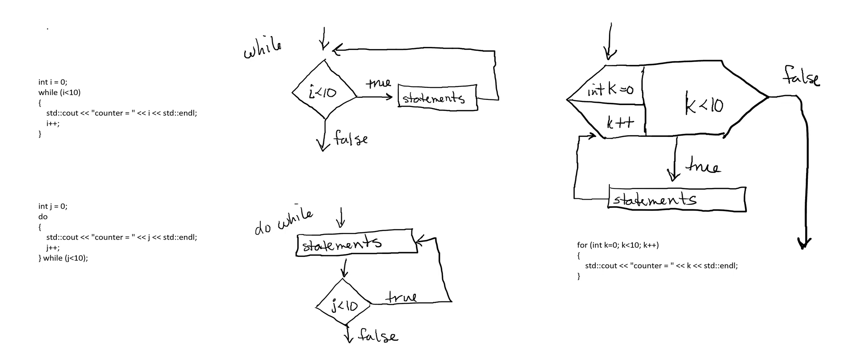Notice how similar these are, but notice the key difference: with the while loop, the test is before the statements. With the do-while loop, the test is after the statements are already run once. Think about using a do-while loop if you ever need a loop that's going to run the statements once even if the test is false, because the test doesn't get run until after the statements are run.